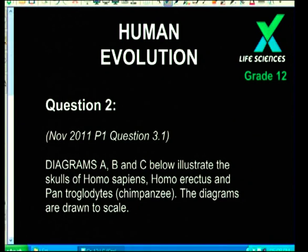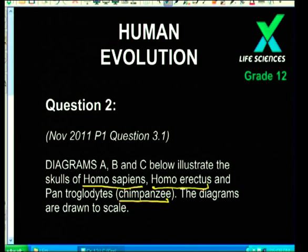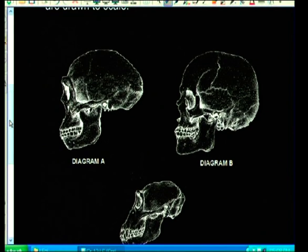Question two: they've given diagrams A, B, C and D showing three different skulls to compare - homo sapiens, homo erectus, and chimpanzees. They love comparing things in tests. Now, notice that they may not give you the skulls in the obvious order, so you need to know the shapes of your skulls and craniums very well.